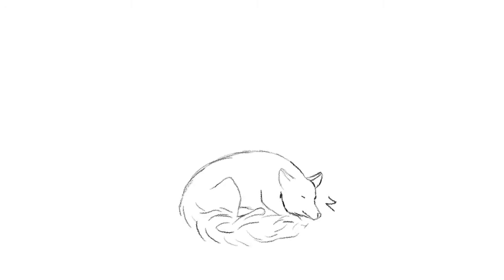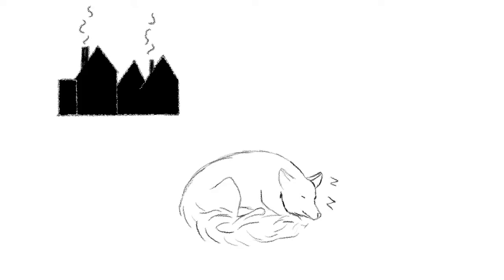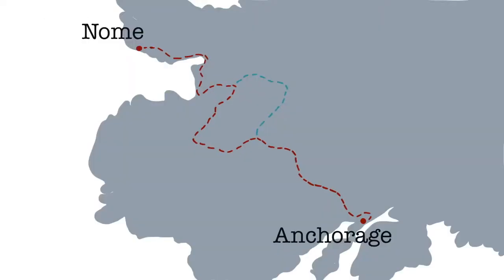There are roughly 27 checkpoints along the route where mushers can stop and rest. Some are in tiny towns and villages while others are just a simple tent or cabin. Since the 1990s, there has always been a ceremonial start to the race in Anchorage, Alaska, followed by the official start of the race the next day. The total length of the race is over a thousand miles or 1,609 kilometers.